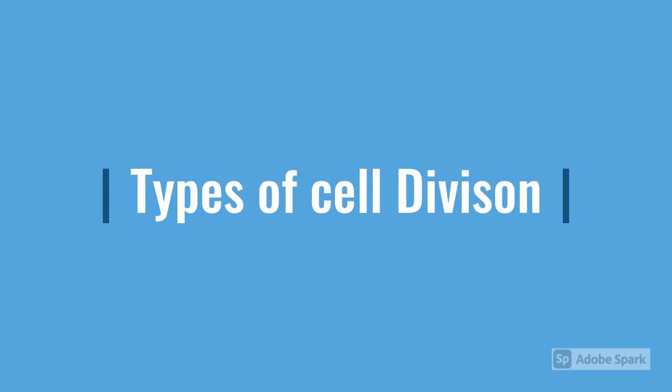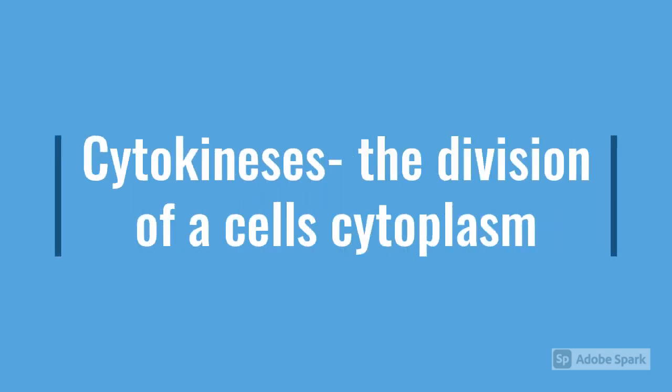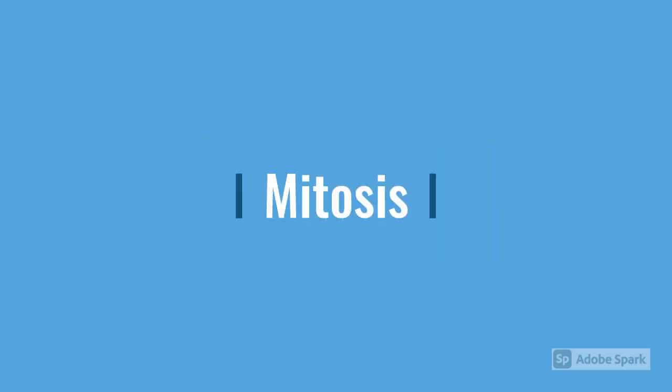The reason why cell division is so important is because it allows growth of organisms and replaces dead or damaged cells. Now let's learn about the different types of cell division: mitosis, which is the division of a cell's nucleus, and cytokinesis, which is the division of a cell's cytoplasm. What we're going to focus on though is mitosis. If you're interested in learning more about cytokinesis, I will leave a link to our website about it.